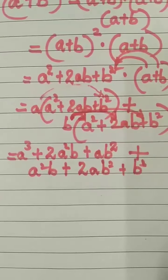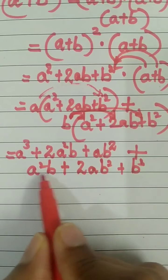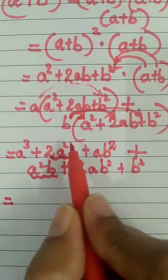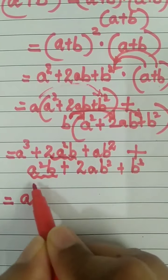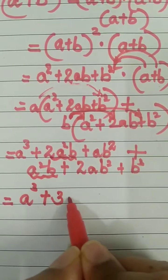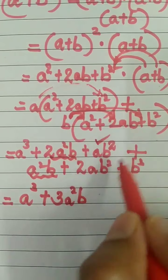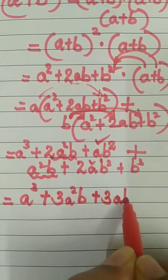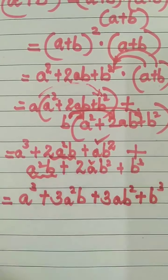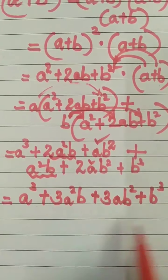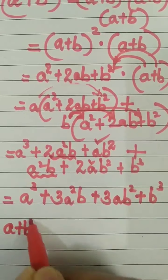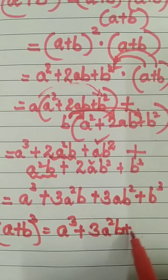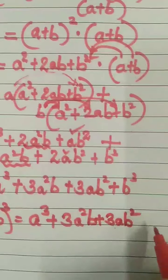Now you can see that 2a²b and a²b are like terms. So 2a²b + a²b = 3a²b. Similarly, 2ab² and ab² are like terms: 2ab² + ab² = 3ab². So we have the expansion of (a + b)³ as a³ + 3a²b + 3ab² + b³.